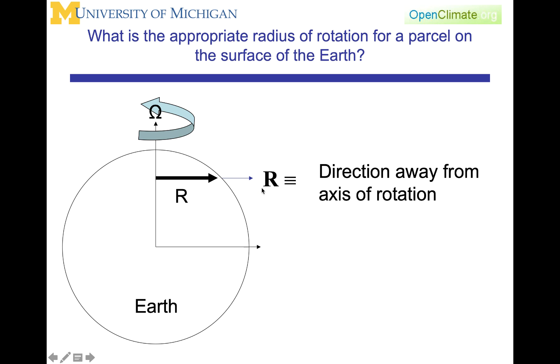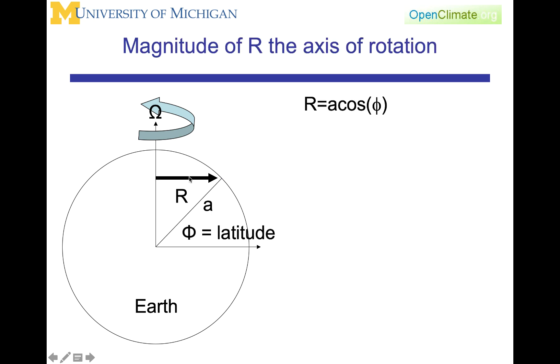We will have a vector r, a large vector r, which is the direction away from the axis of rotation. Here is the axis of rotation. Here is our vector r. If we look at the radius at this particular latitude, hence we have here phi is equal to latitude, a is the radius of the Earth, and what we want now is the radius around which this parcel on the surface is rotating, then r is equal to a cosine phi. This is basic trigonometric functions of the relationship of the hypotenuse A, the angle phi, and the relationship between the hypotenuse and either the adjacent or the opposite side from that angle.